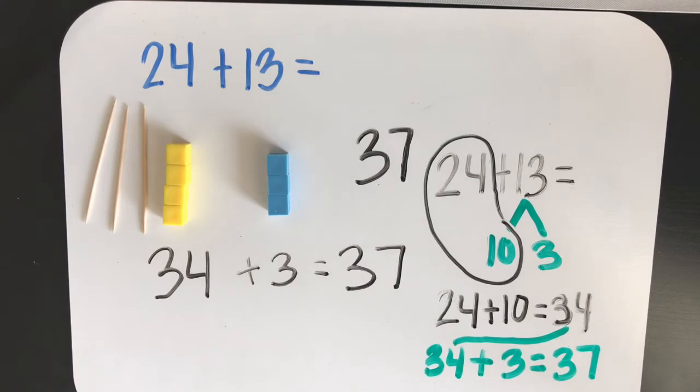Let's read our number sentences. Twenty-four plus ten equals thirty-four. Thirty-four plus three equals thirty-seven. We are using our expertise on adding tens by adding the tens first, and then the ones.